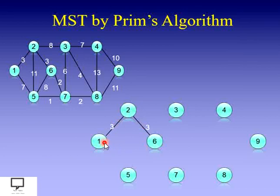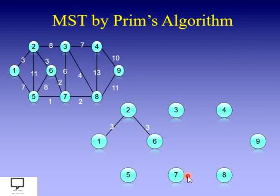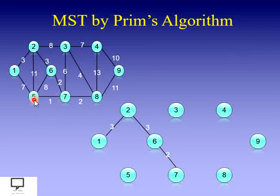With vertices 1, 2, and 6 included, the adjacent edges are: 1–5 with weight 7, 2–5 with weight 11, 2–3 with weight 8, 6–5 with weight 8, and 6–7 with weight 2. From these, the minimum weight is 2 for edge 6–7, so we include that. Now we consider 4 vertices — 1, 2, 6, and 7 — and find that edge 7–5 has the minimum weight among all adjacent vertices, so we include it next.